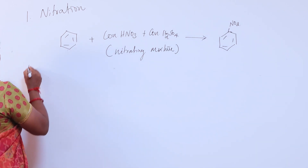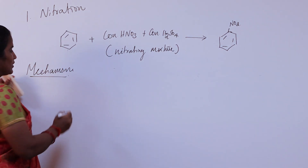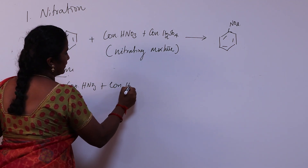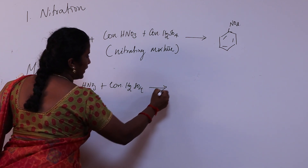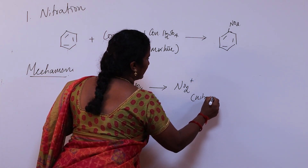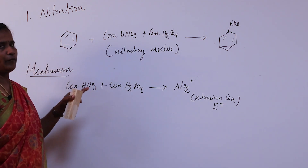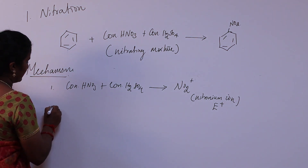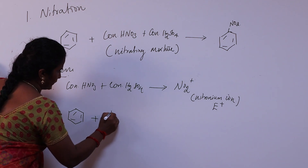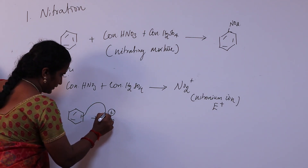In the first step of nitration, concentrated nitric acid and concentrated sulfuric acid react to give the nitronium ion, NO2+. The nitronium ion is the electrophile. In the next step, this electrophile attacks the benzene ring — the pi electrons of benzene attack the NO2+.